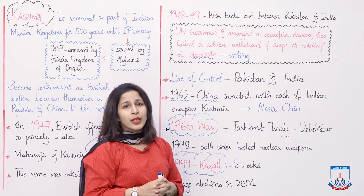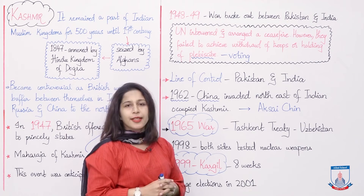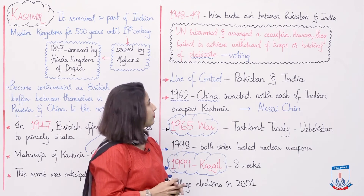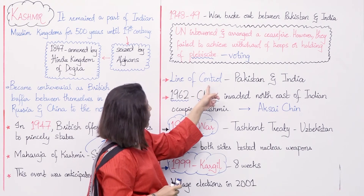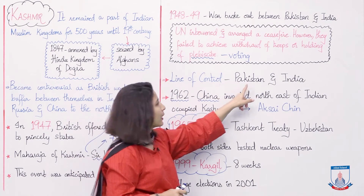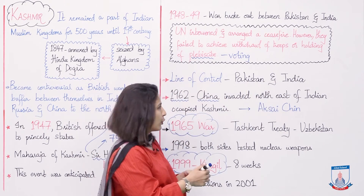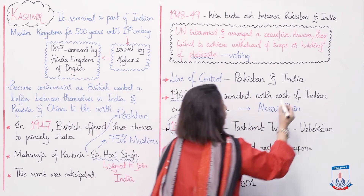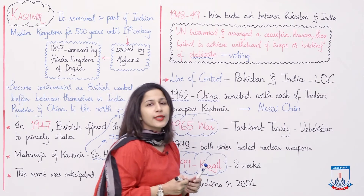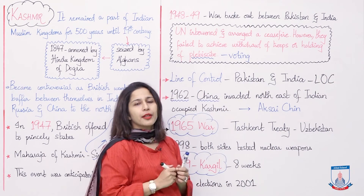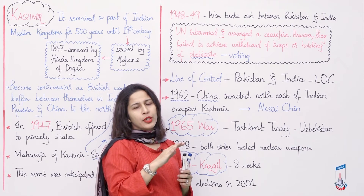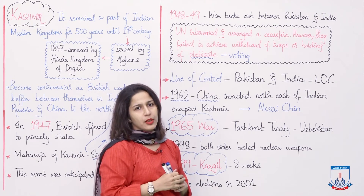The UN's resolution was followed by neither Pakistan nor India. Then a line of control was drawn between Pakistan and India, known till today as the LOC — the Line of Control — which divided Pakistan-occupied Kashmir, Jammu and Kashmir, and Indian-occupied Kashmir.